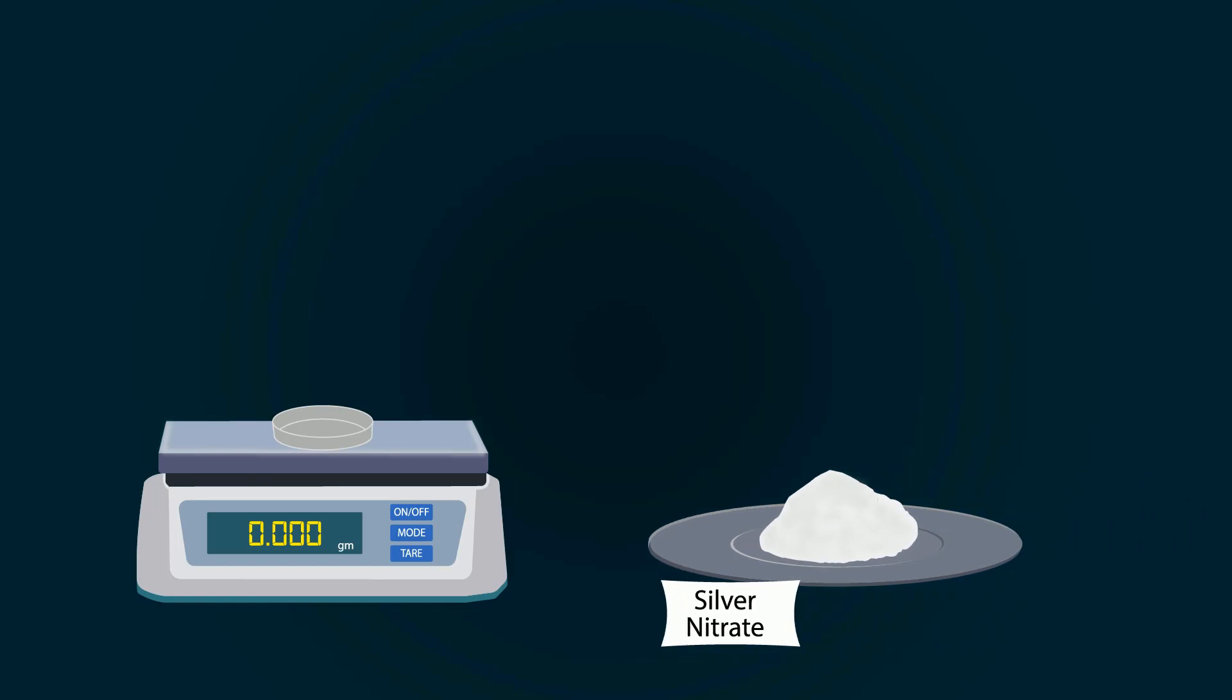First of all, take a weight balance, power it on, put a petri dish on it, and don't forget to tare it. Now take silver nitrate chemical and put it into the petri dish with the help of a spatula. Weigh precisely 12.74 grams.